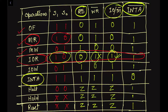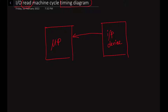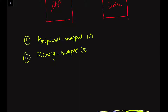The INTA acknowledgement signal will be zero except in the case of an INTA operation. Now let us understand the input-output devices addressing scheme. In the case of the 8085 microprocessor, a separate 8-bit addressing scheme for input-output devices is used. Input-output devices can be interfaced using two types: peripheral-mapped I/O, where a device is identified with an 8-bit address and enabled by IO-related control signals; and memory-mapped I/O, where the device is identified by a 16-bit address and enabled by memory-related control signals.